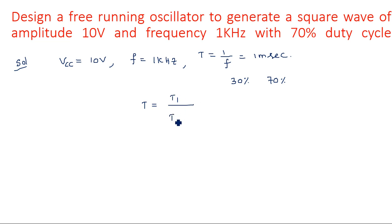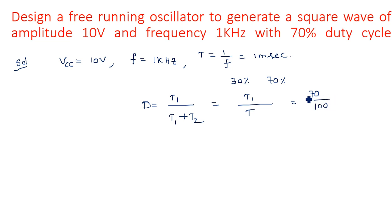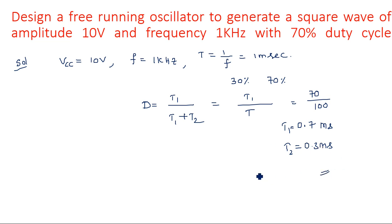Duty cycle is equal to T1 by (T1 plus T2), which equals T1 by T. If T1 is 70 percent of the overall time period, then T1 equals 0.7 milliseconds and T2 equals 0.3 milliseconds, giving an overall time period of 1 millisecond or 100 percent. Now we need to calculate the design parameters of this astable multivibrator.